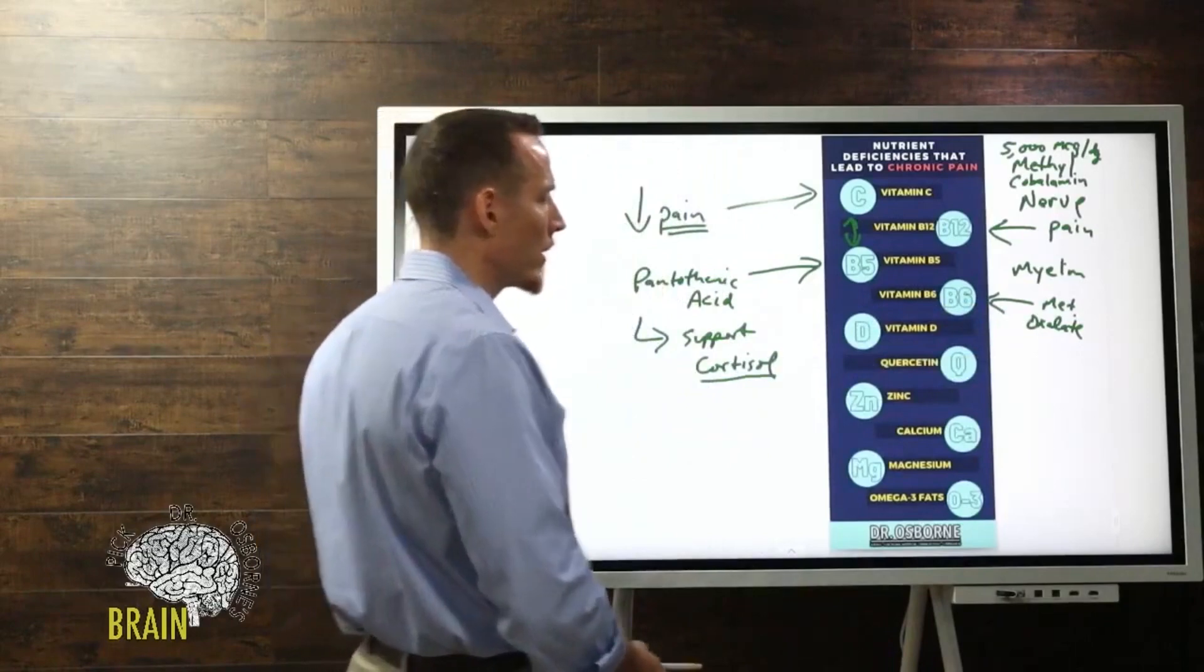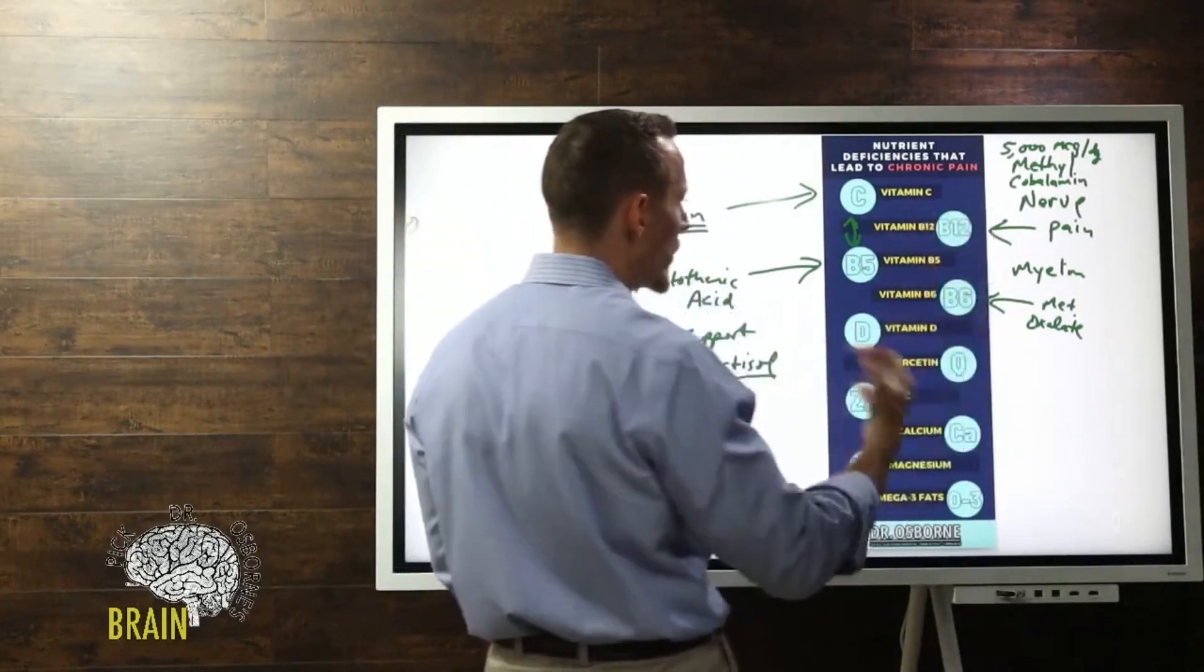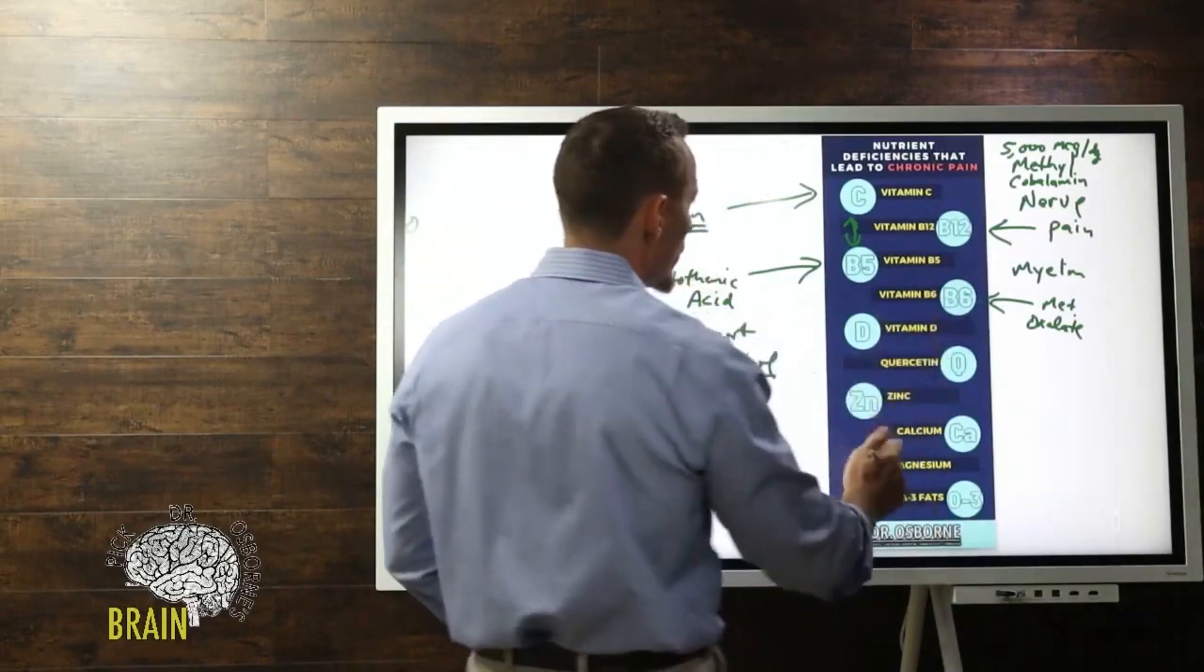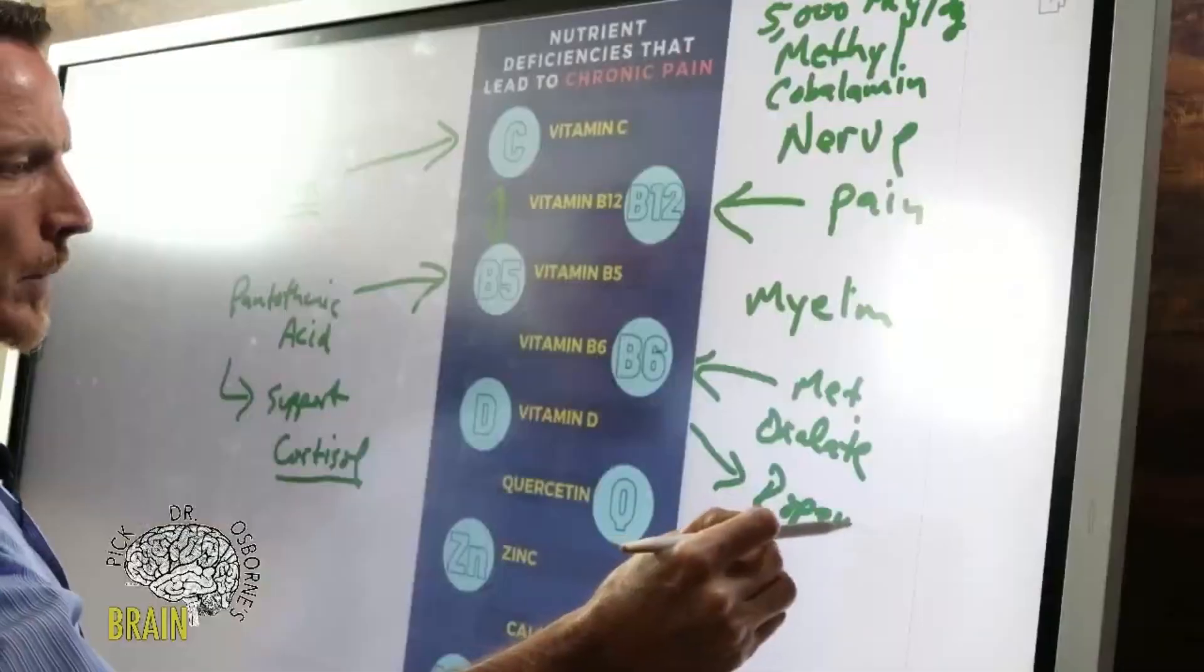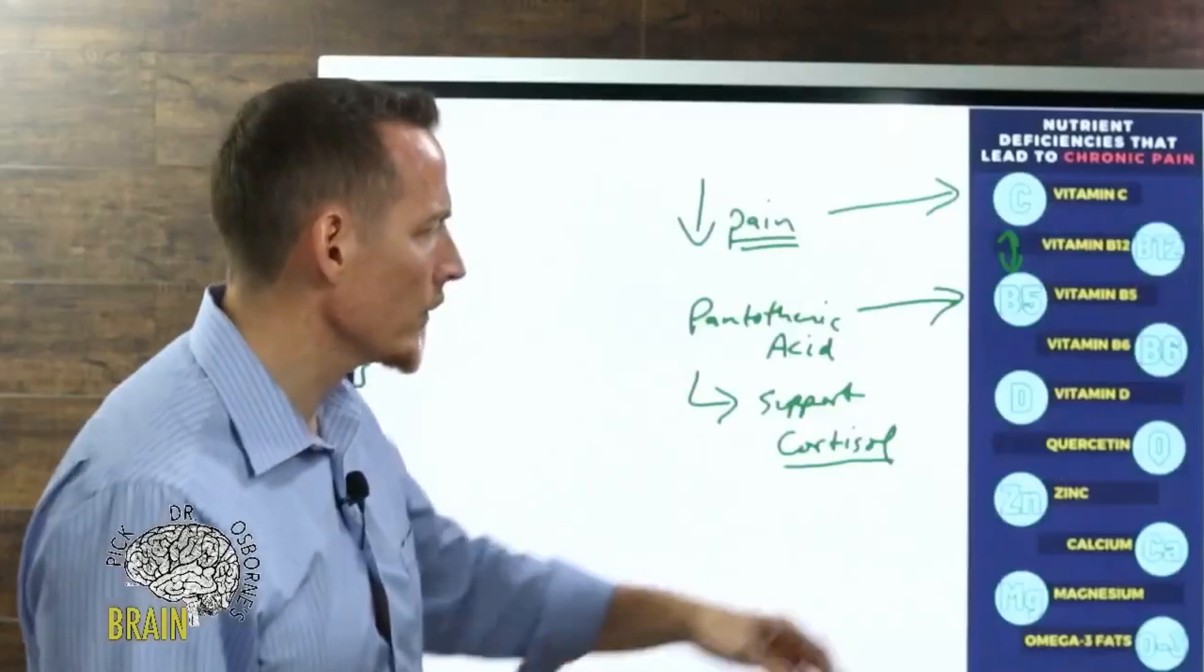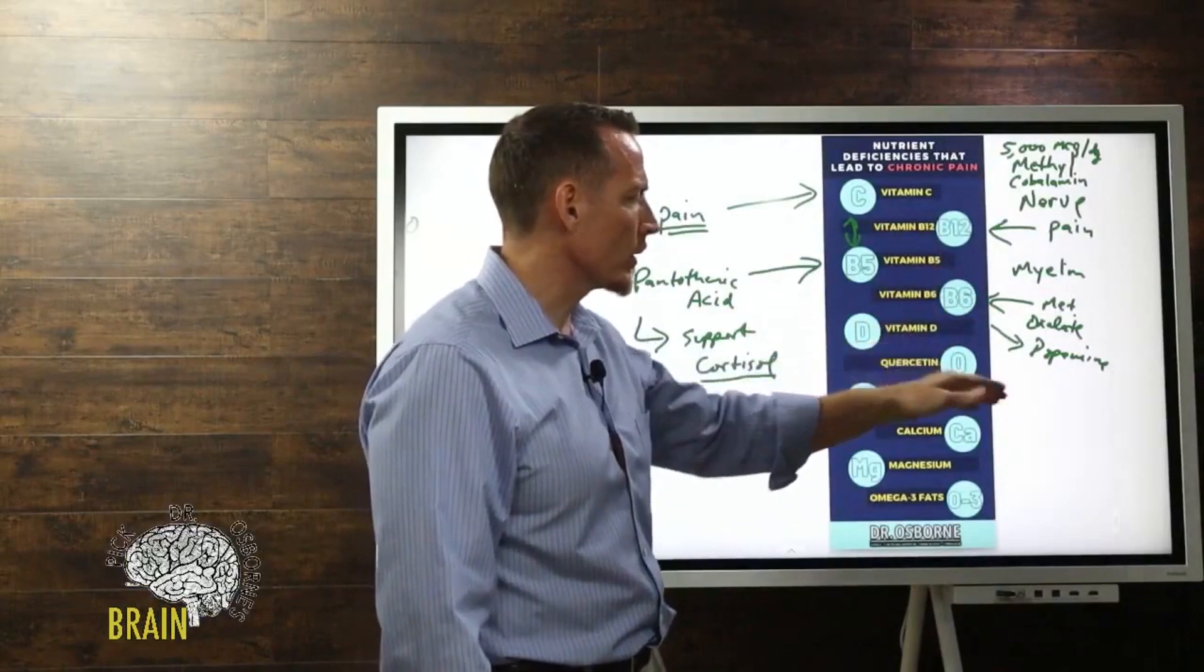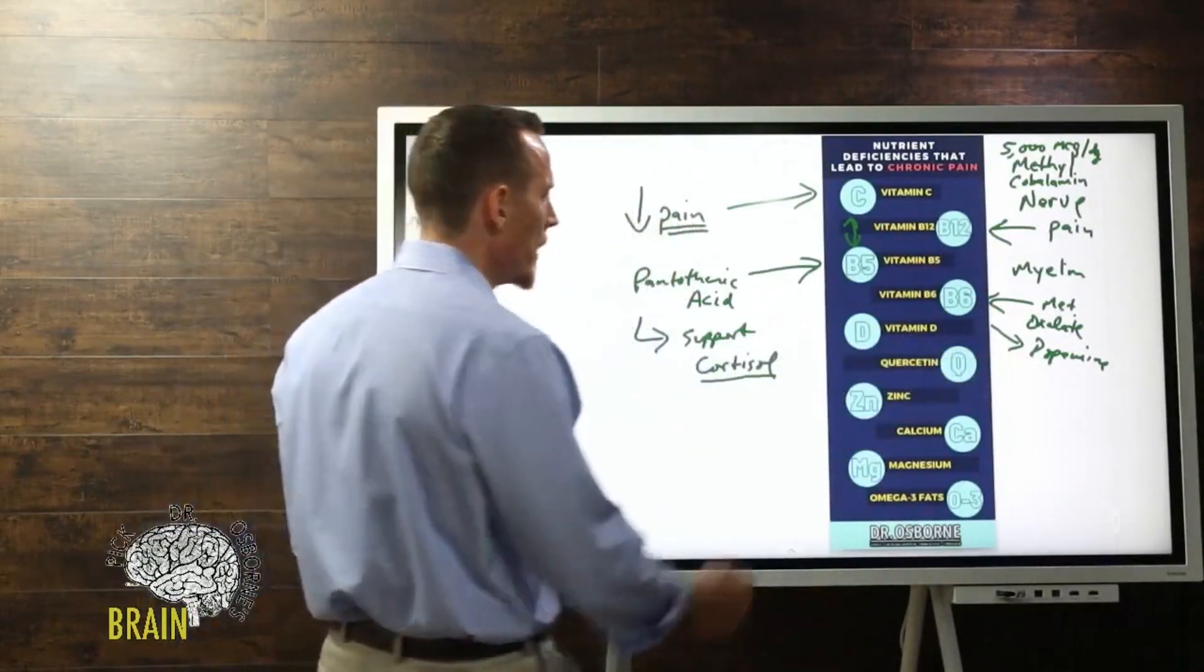There's also a chemical called homocysteine that B12 and B6 both help to regulate, and homocysteine elevations can contribute to nerve pain. You also need vitamin B6 to produce neurochemicals like dopamine. Dopamine is one of those molecules that helps you regulate perception of pain, so low levels will make a person more susceptible to pain.